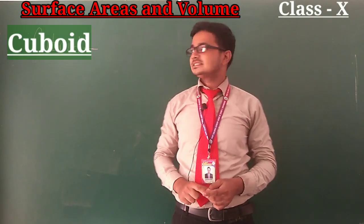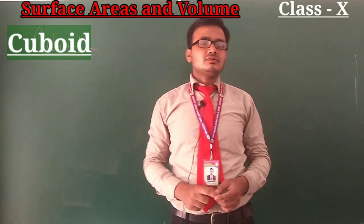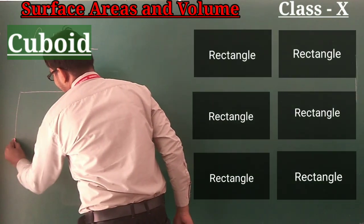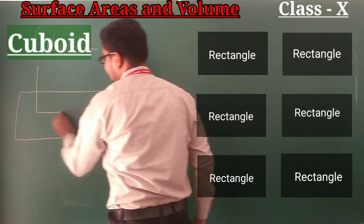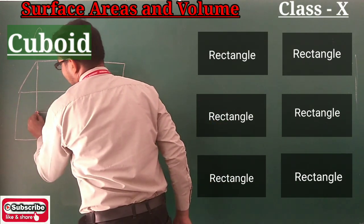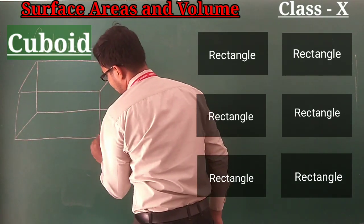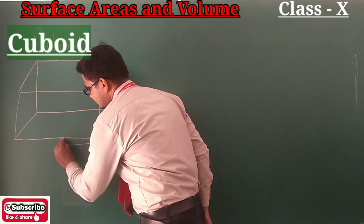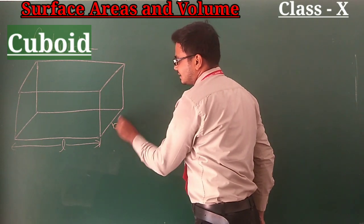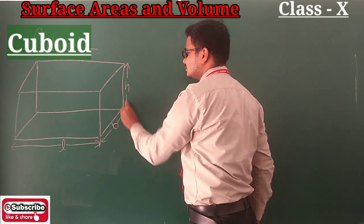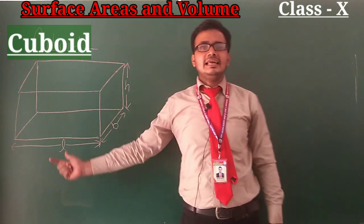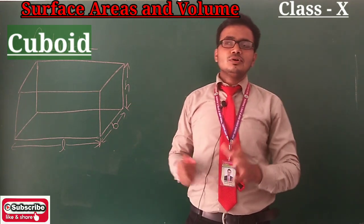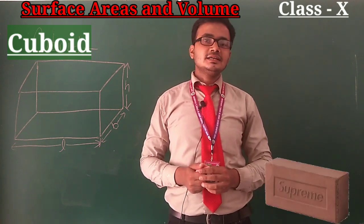Our first point of this chapter is Cuboid. A cuboid is a three-dimensional figure. It is the combination of six rectangles. It has three dimensions: length, breadth, and height — that's why it is called a three-dimensional figure. The most common examples of a cuboid are bricks and a room.